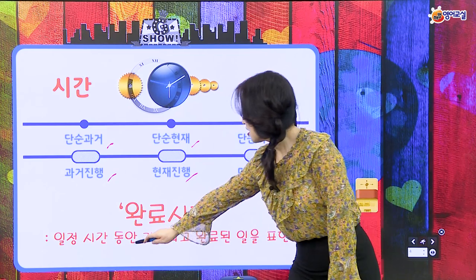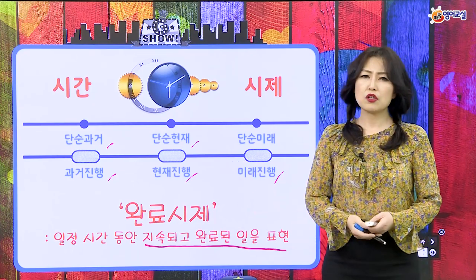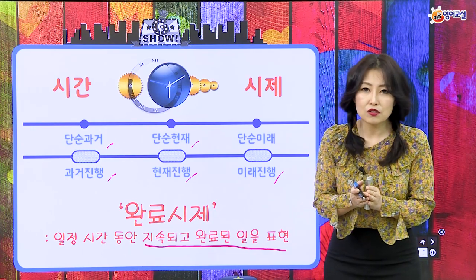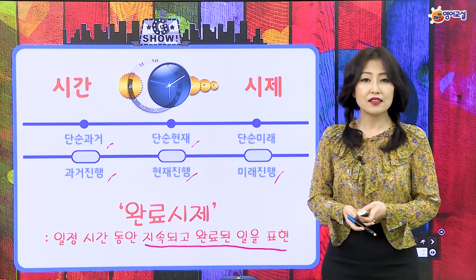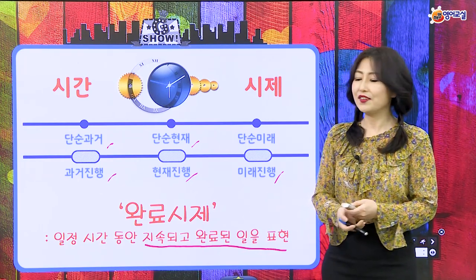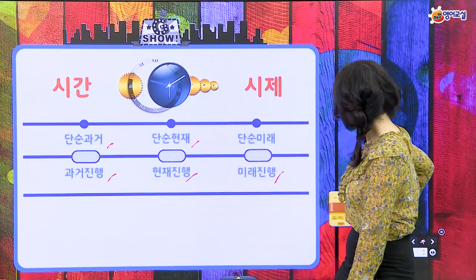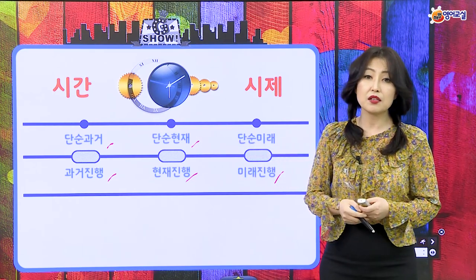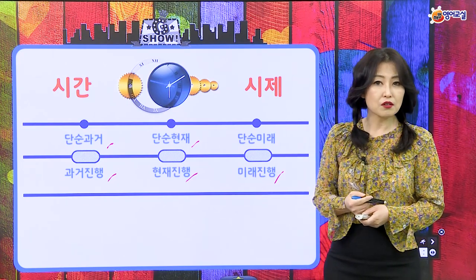완료 시제는 일정 시간 동안 지속되고 완료된 일을 표현하는 거예요. 진행 시제랑 뭐가 달라요? 진행 시제는 일정 시간 동안 쭉 행동이 이어지는 행동 자체를 이야기하는 것이고, 완료 시제는 그것이 언제 완료가 돼서 끝났나에 해당하는 얘기를 하는 거예요. 영어를 잘 하려면 완료 시제를 잘 써야 돼요. 완료 시제에도 과거 완료, 현재 완료, 미래 완료 이렇게 세 개가 존재해요.